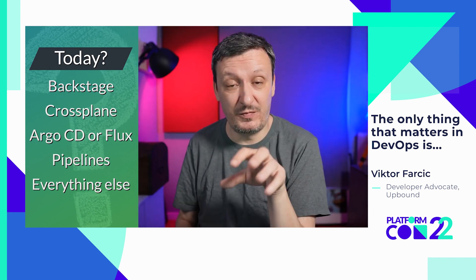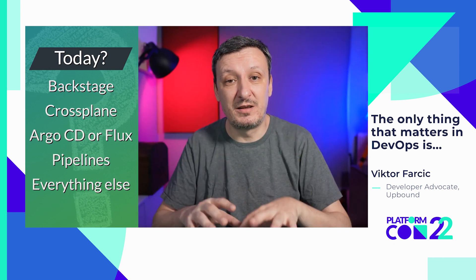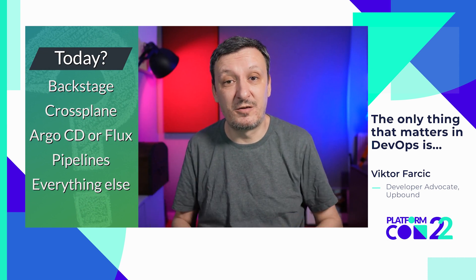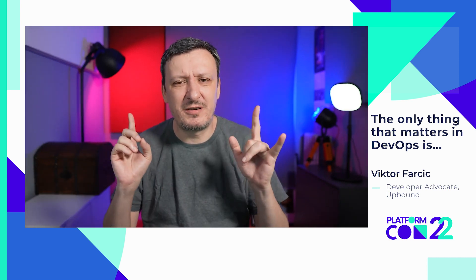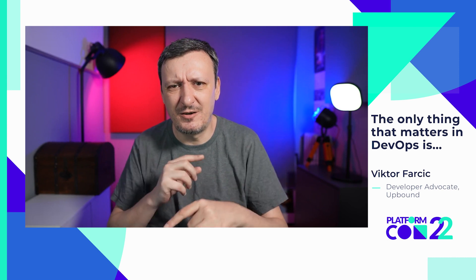The ideal tools today are: Backstage for the frontend, Crossplane to act as a control plane with compositions that make it easy to create Custom Resource Definitions with controllers, ArgoCD or Flux for Git synchronization, and pipelines for CI. Those are the key ingredients if you're building an Internal Developer Platform today. Come to my other talk which will be hands-on, and you can see some of these things in action.